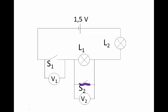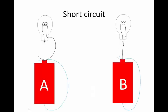Even if you were to close switch S2, it's still a broken circuit — these bulbs will not shine. These two circuits, A and B, do have current flowing through them, but they have short circuits.